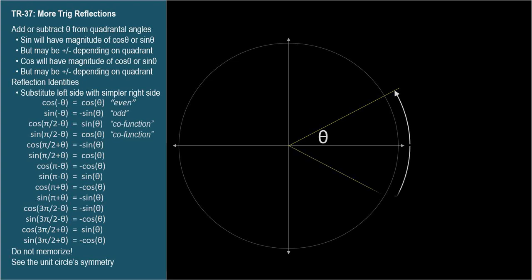We can draw negative theta having the same magnitude as theta in the negative clockwise direction. As we saw in TR-36, the symmetry across the x-axis means that their cosines are the same: cosine of negative theta equals cosine theta.